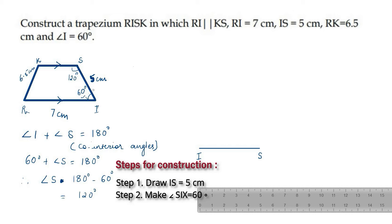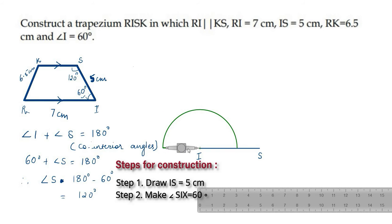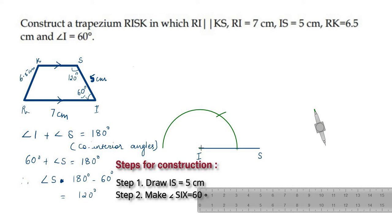Since angle I is equal to 60 degrees, open the compass to any convenient radius with I as center and draw an arc. Now, with the same radius, place the compass at the point where this arc touches the line and cut this arc. This gives us 60 degrees. Draw a ray from I passing through this point of intersection.